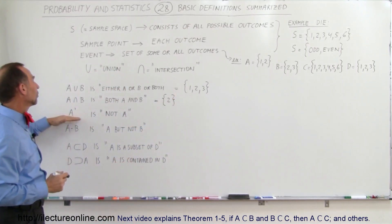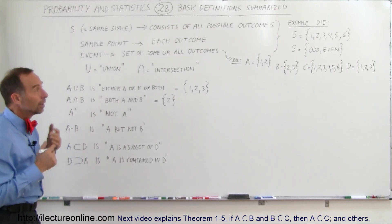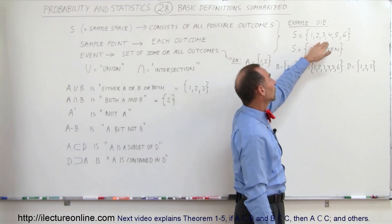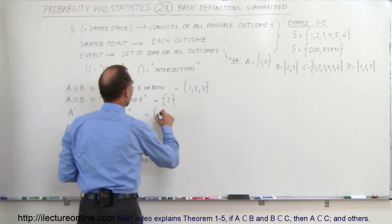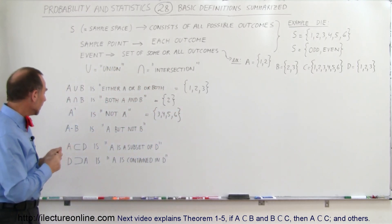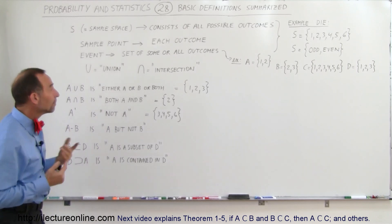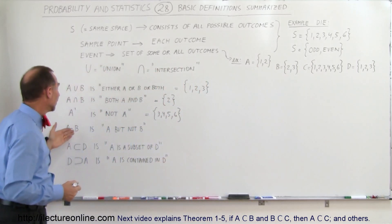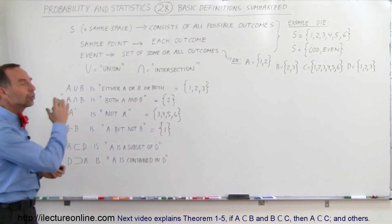Now we have 'not A' — that's A with a little tick mark. We're looking for all the elements that are not in A. The total sample space is one, two, three, four, five, six. A has one and two as outcomes. So what belongs to the sample space but does not belong to A? That's the remaining: three, four, five, and six. So 'not A' equals three, four, five, and six. Then we have 'A but not B,' meaning all outcomes in A that don't belong to B. One belongs to A but not to B, while two belongs to A and also to B. So A but not B equals simply the outcome one.